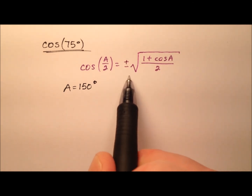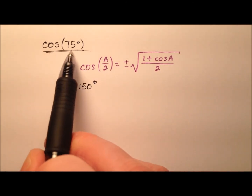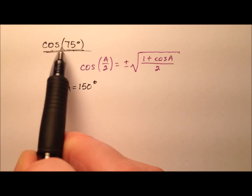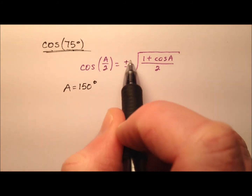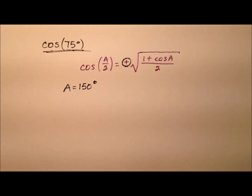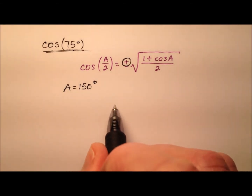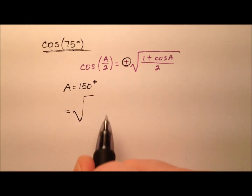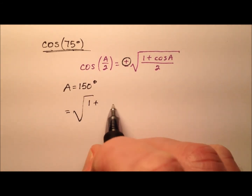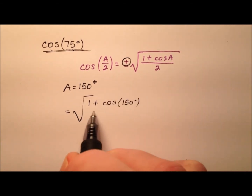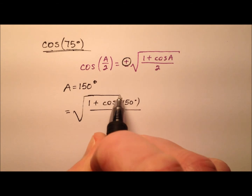Now, how about this plus or minus? Well, we're looking for the cosine of 75 degrees, and we know that 75 degrees resides in the first quadrant, and cosine is positive in the first quadrant. So I'll be taking the plus and ignoring the minus in this formula. So we're going to find the cosine of 75, and it's going to be the square root of 1 plus the cosine of 150 degrees, all over 2.